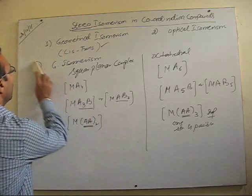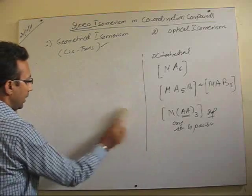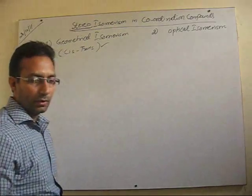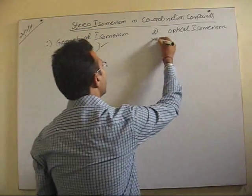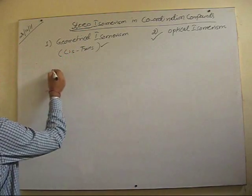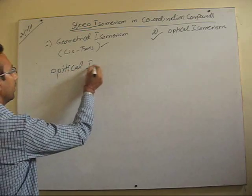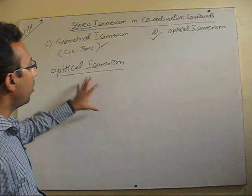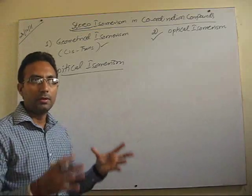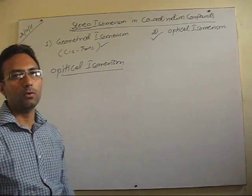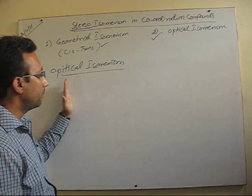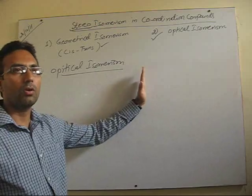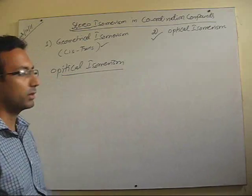Up to this we have covered all structural as well as geometrical isomerism. Now we will be discussing the new category of stereoisomerism, that is optical isomerism. When the topic of optical isomerism comes, it all depends on the behavior of the compound towards plane polarized light — whether its plane remains the same or is rotated as the light passes through the solution of that complex.